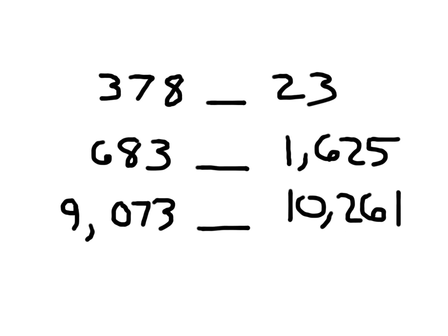When you are comparing numbers, it is really important about place values. This 3 is worth 300, so we already know that this number is 378. There's no hundreds here — this 2 is only worth 20. 378 compared to 23 — you know that it's supposed to be greater than. So this gets the greater than symbol.